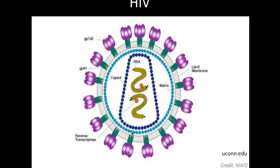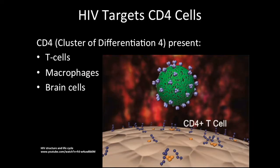Inside the envelope, you're going to have a nucleocapsid, which is basically a capsid made out of protein. Inside you have single-stranded RNA that will be used, along with reverse transcriptase, to make double-stranded DNA, which will be incorporated into the host genome.